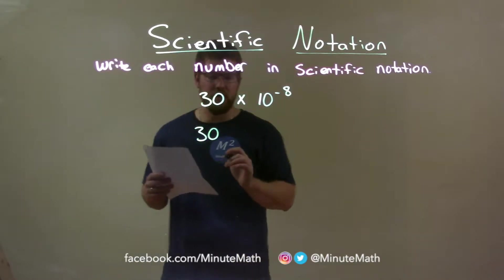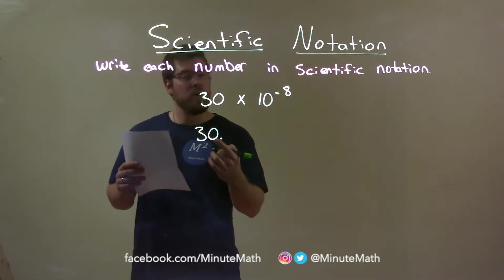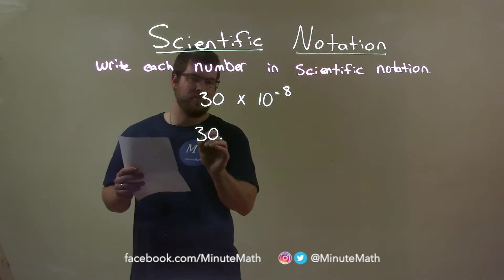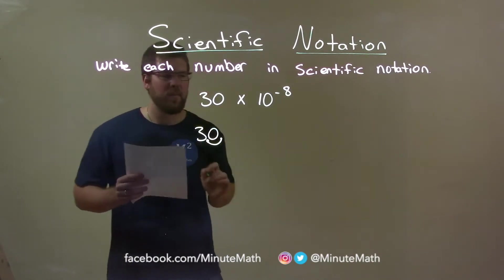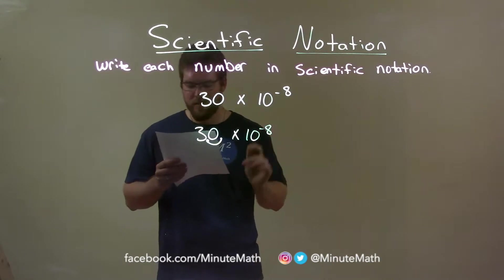Now, scientific notation tells me that this decimal place is right there. I have to move that over to the left one spot so that it's right here after the 3. So, 3 is in the 1's position, okay? So, I keep that in mind. I'm going to bring down times 10 to the negative 8th power.